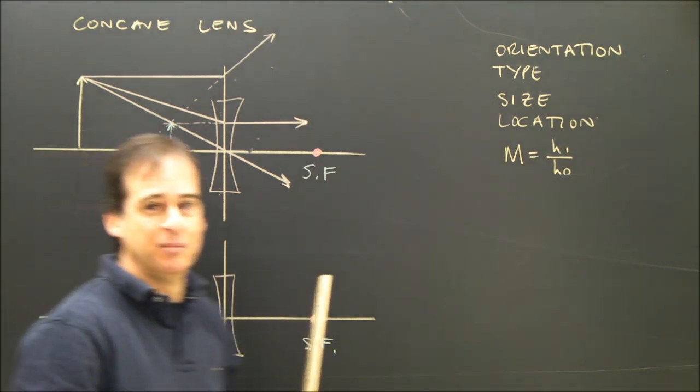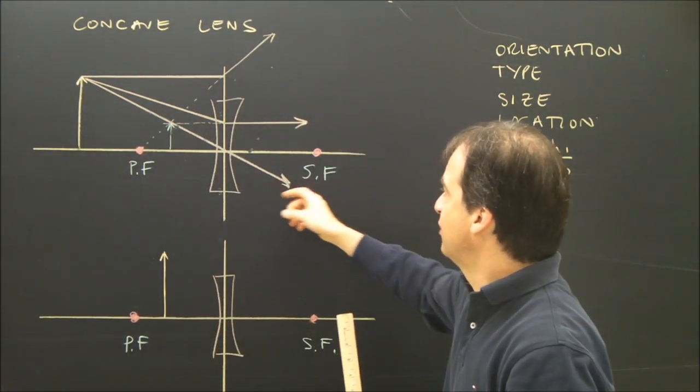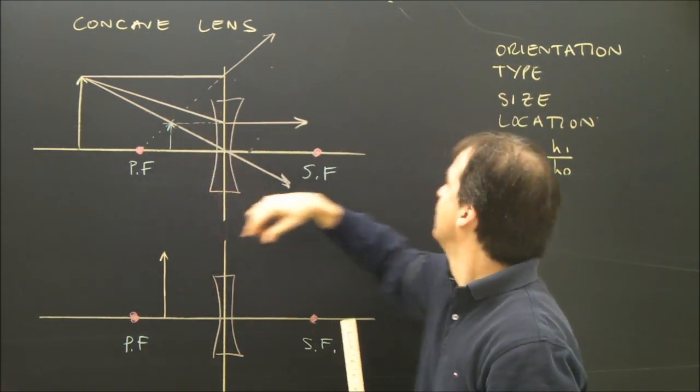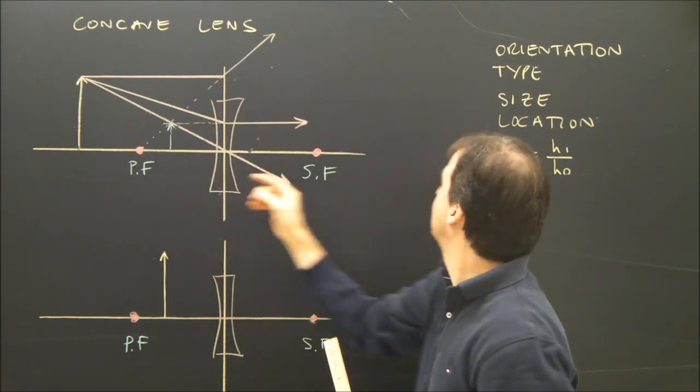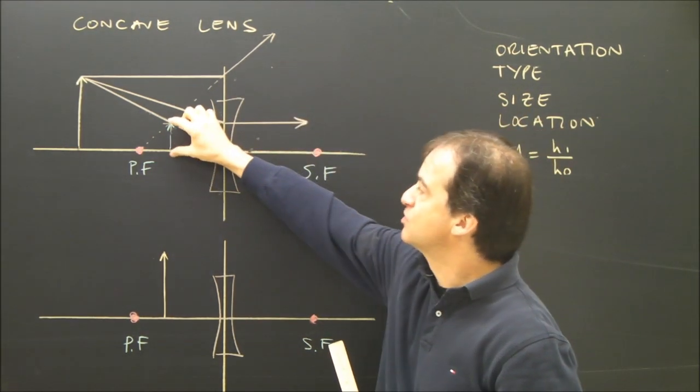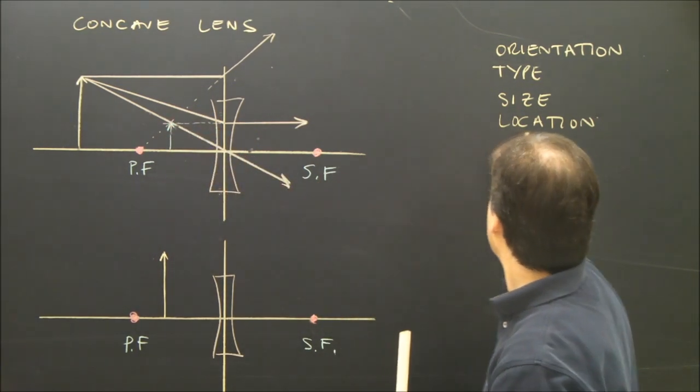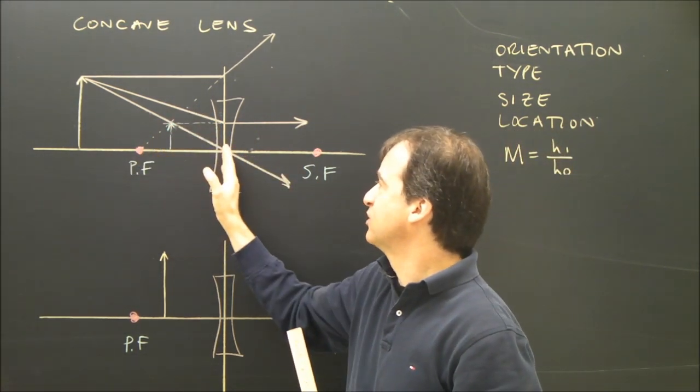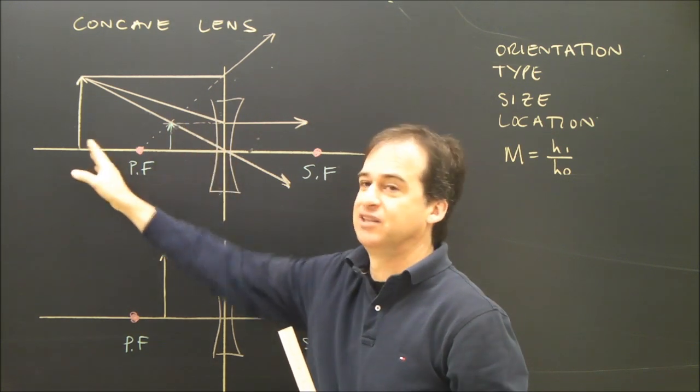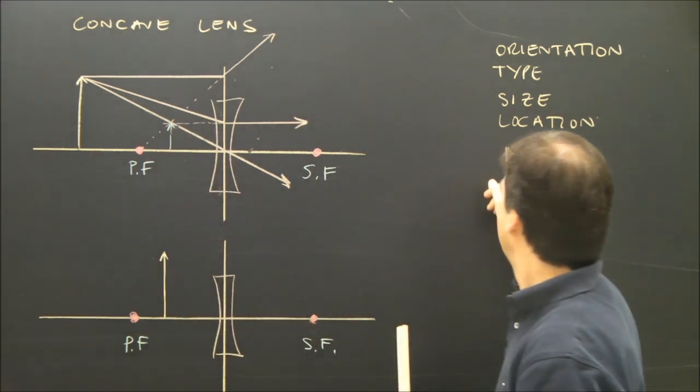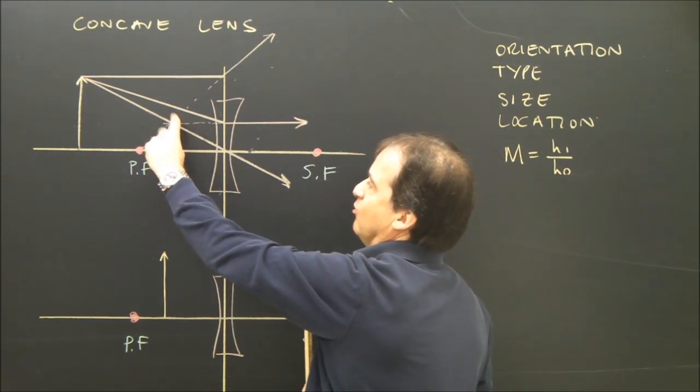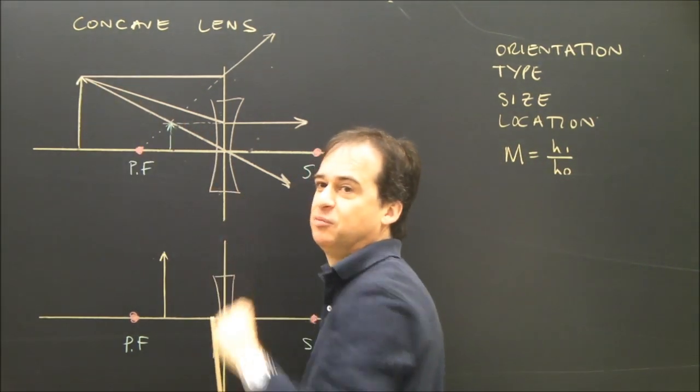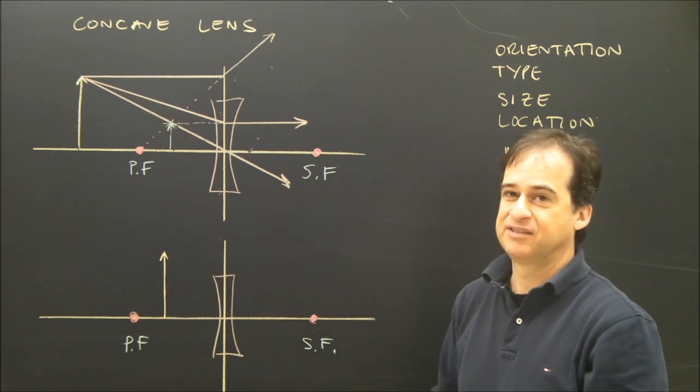So to describe the image, I have to describe its orientation. It's upright. The image type is virtual because these rays didn't actually meet. The size is smaller. The location is between the primary focus and the lens, so it's closer to the lens than the object. And the magnification, height of image over height of object, it's going to be smaller, so it's going to be less than one.